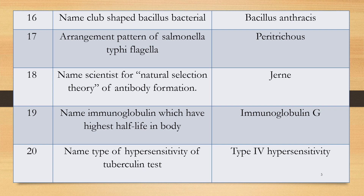Question 19: Name the immunoglobulin which has the highest half-life in the body and how that immunoglobulin provides protection to the animal — meaning more time in the body. Answer: Immunoglobulin G (IgG).